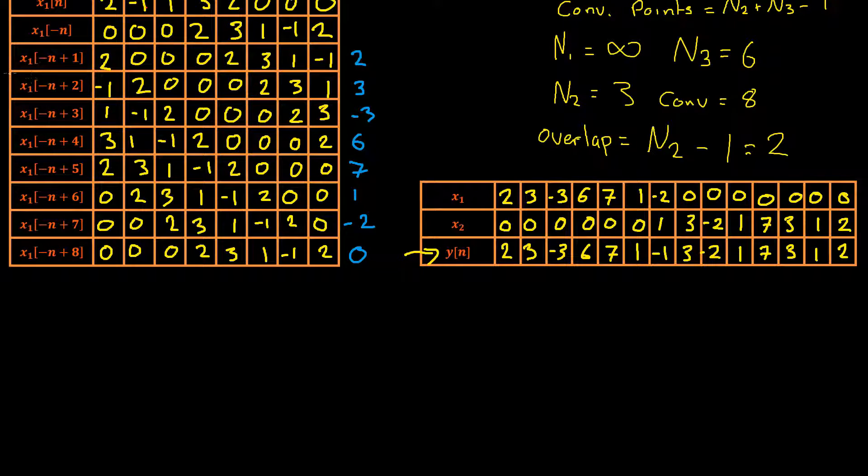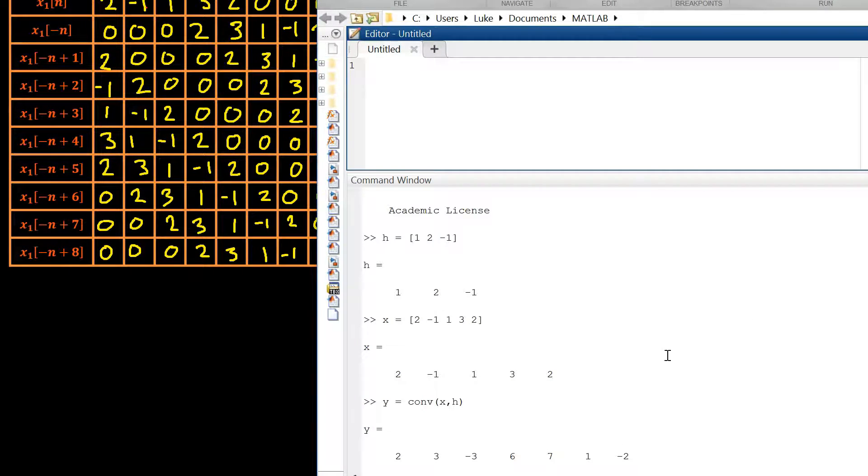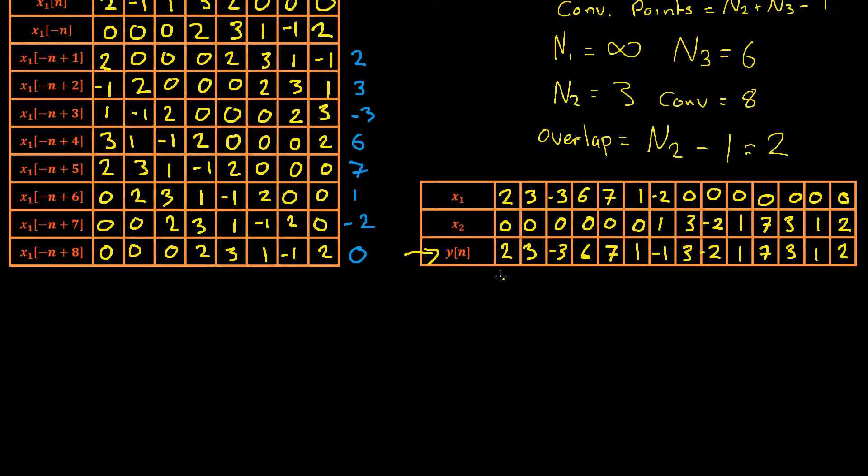Lastly we can show that the convolution of our x1 term was correct by using MATLAB. So here you can see we create our h, our impulse response of 1, 2, negative 1. We have our x of 2, negative 1, 1, 3 and 2, and our output is 2, 3, negative 3, 6, 7, 1 and negative 2 which exactly lines up with what we've got here. 2, 3, negative 3, 6, 7 and we lose our 2 because we have that 1.